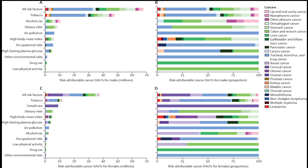C. Hormonal Factors: early onset of menstruation and late menopause can slightly increase the risk. Not having children or having them later in life may also contribute to a higher risk. D. Lifestyle and Environmental Factors: excessive alcohol consumption and obesity are risk factors for breast cancer. Lack of physical activity and exposure to certain hormones, such as postmenopausal hormone therapy, may also play a role.